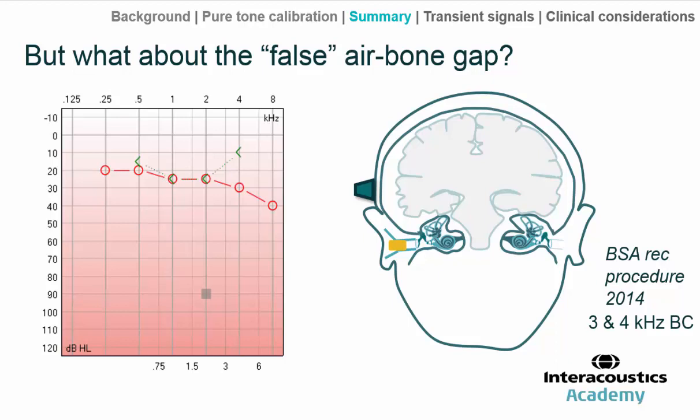Advice has been that these excessive air-bone gaps isolated to the high frequencies and hard to explain clinically may in fact be caused by airborne radiation from the bone vibrator, which can propagate down the ear canal and then be heard by the air-conducted route. This is thought to be a particular problem at 3 and 4 kHz. The advice has been to plug the ear canal with a piece of foam. But what can commonly happen is that once the ear is plugged and one follows these procedures, quite frequently it doesn't seem to have much of an effect at all.